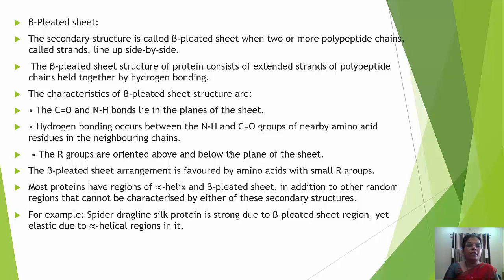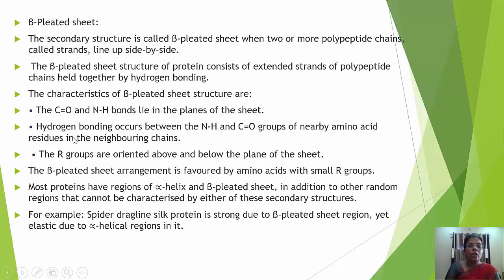The second type of secondary structure is the beta pleated sheet. It forms when two or more polypeptide chains, called strands, line up side by side. The beta pleated sheet structure consists of extended strands of polypeptide chains held together by hydrogen bonding. Characteristics: the carbonyl (CO) group and NH group bonds lie in the plane of the sheet. Hydrogen bonding occurs between the NH and CO groups of nearby amino acid residues in the neighboring chain.